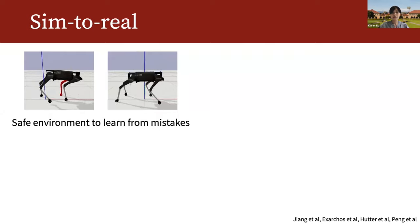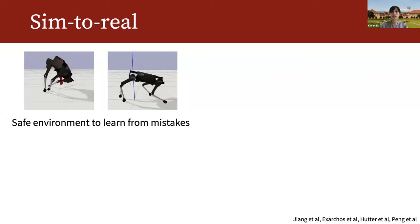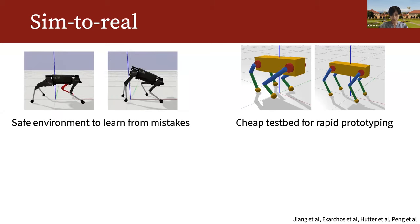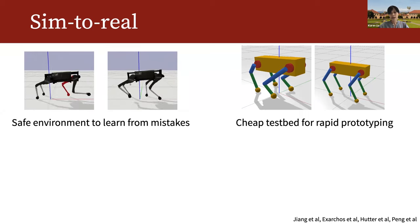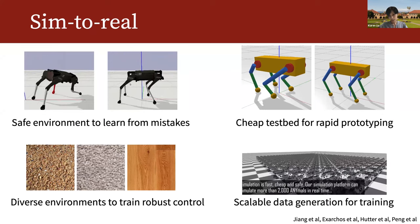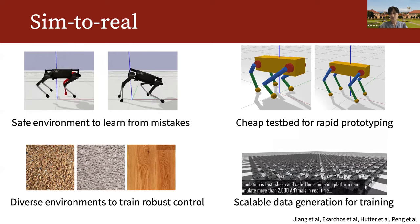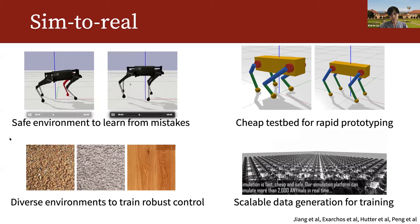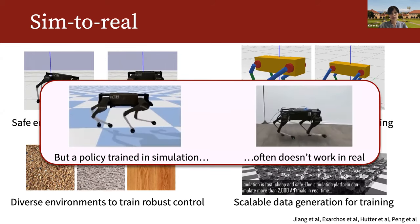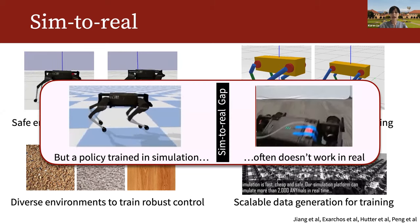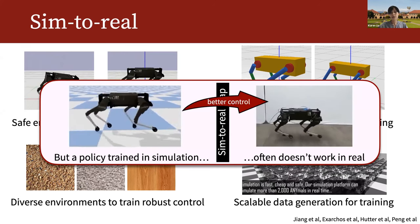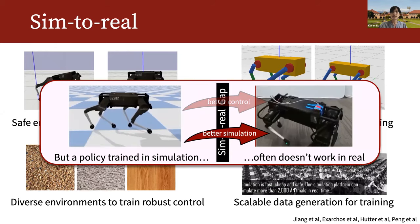AI has a promise to endow a new generation of robots with mobility and decision-making skills. But unlike images and text, acquiring robot training data requires careful instrumentation in physical experiments, which can be challenging and risky to the robots and sometimes even to the experimenters. For many physical tasks, the quantity of training data needed is simply infeasible to collect in the real world. Physics simulation, on the other hand, can provide a safe and inexpensive virtual playground for robots to acquire physical skills and learn from mistakes.